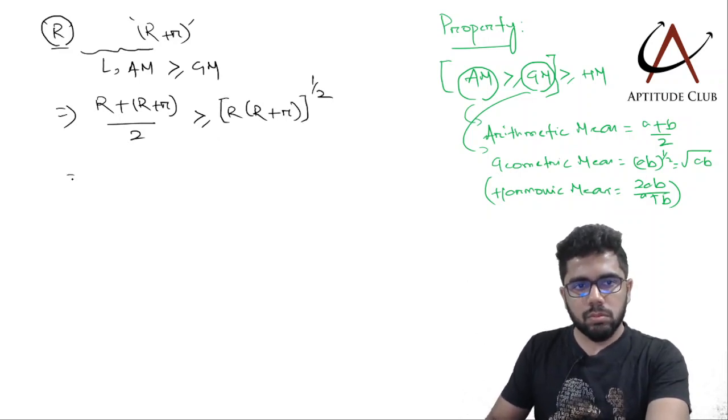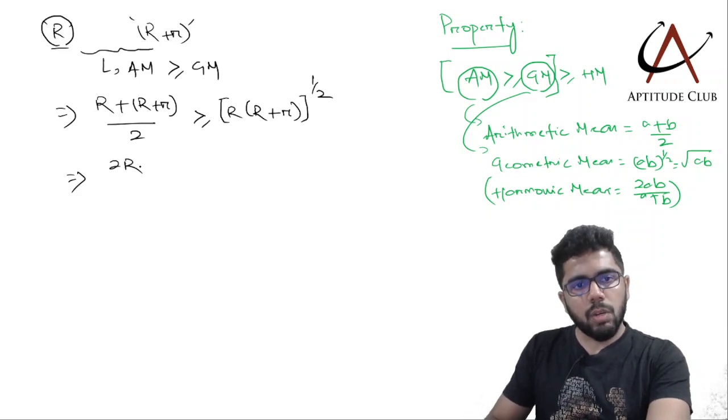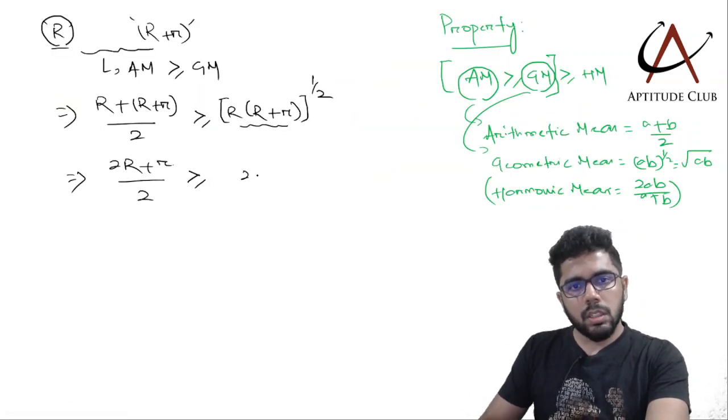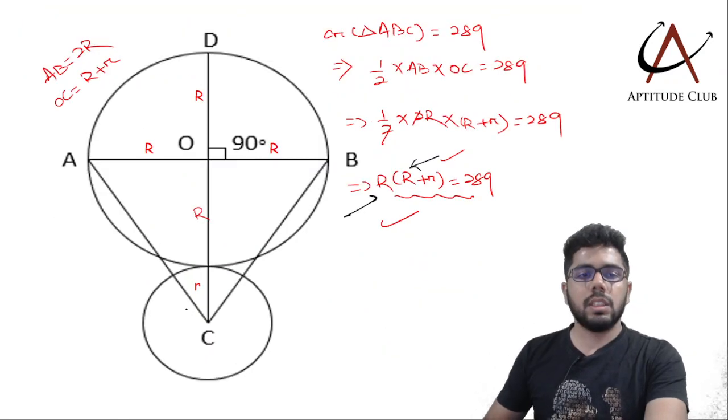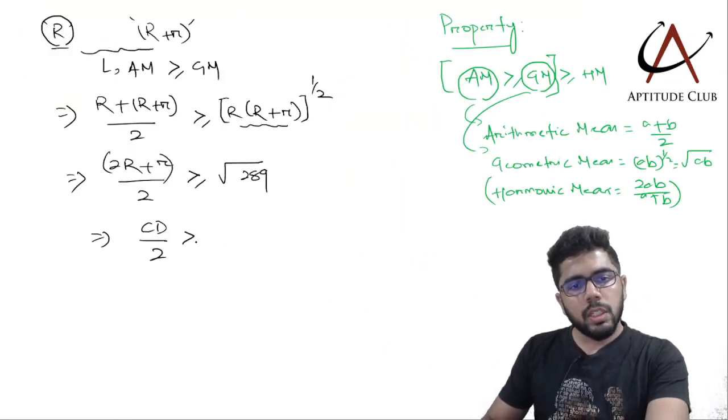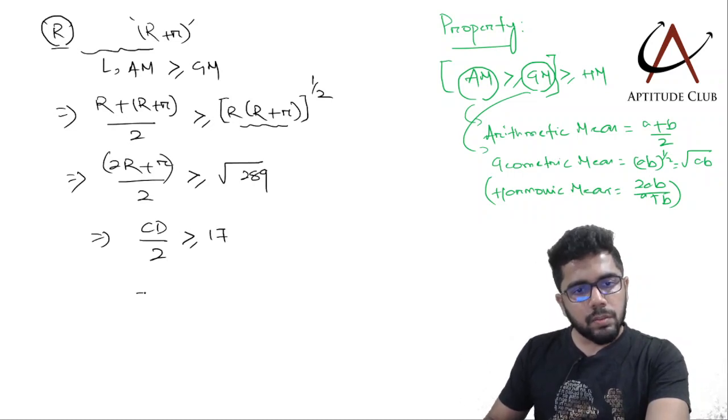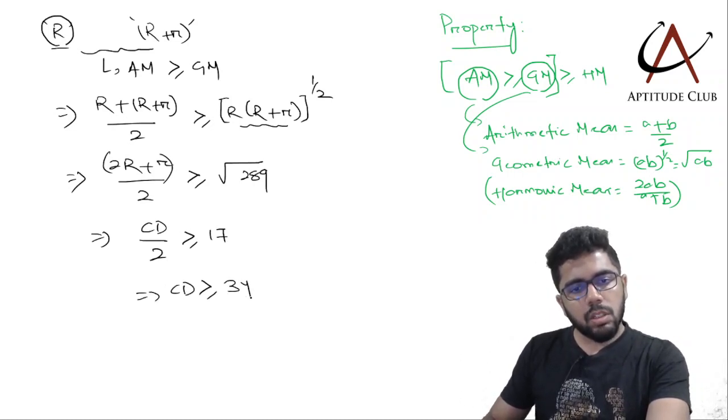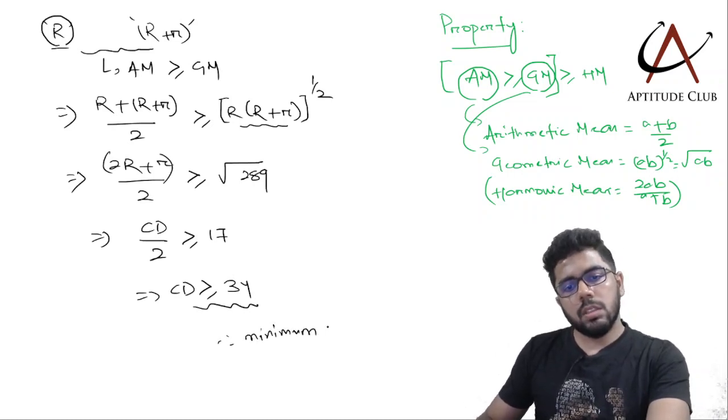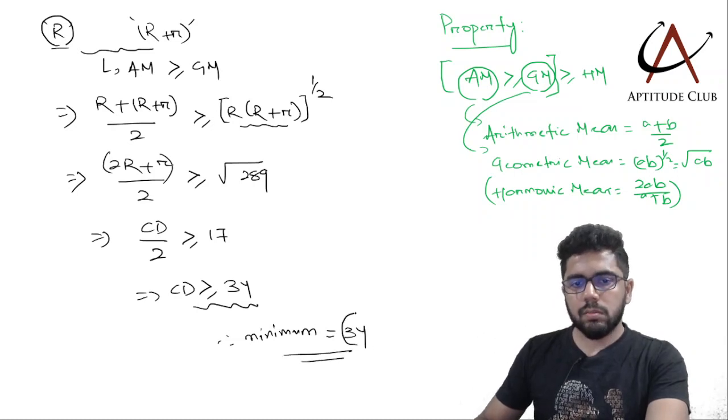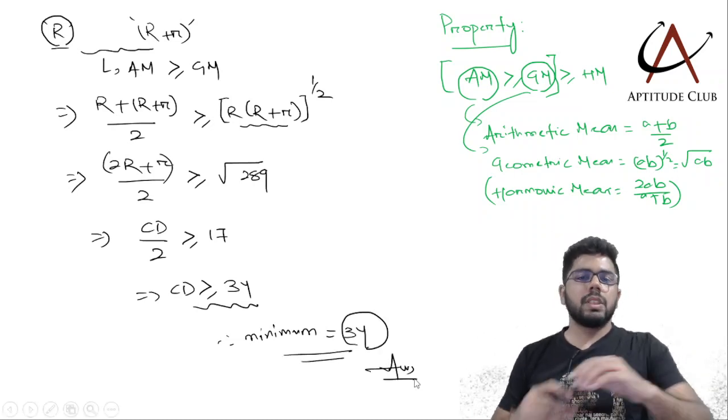We saw that 2R plus r is basically CD. So I get CD divided by 2 is greater than or equal to 17. That means CD is greater than or equal to 34. So what is the minimum value of CD? 34. And that is our answer. Beautiful question. CD is greater than or equal to 34, so the minimum is 34. How beautifully they have used these two concepts in the question.